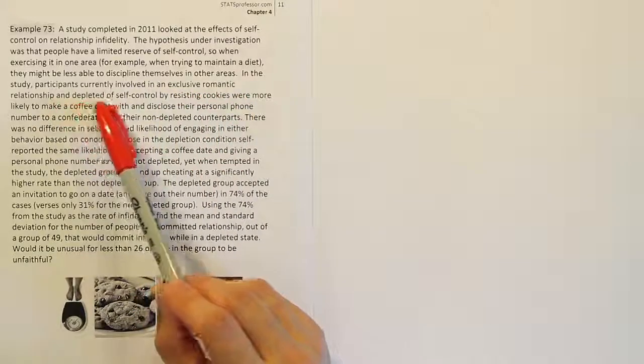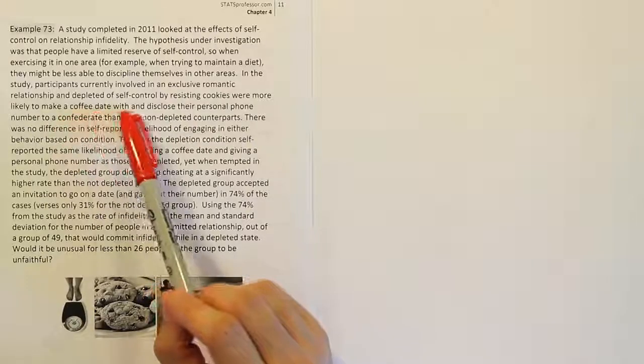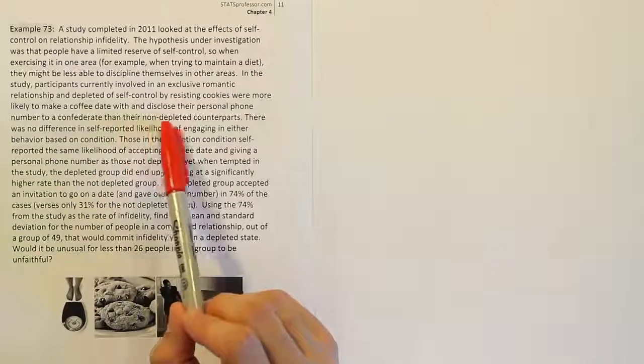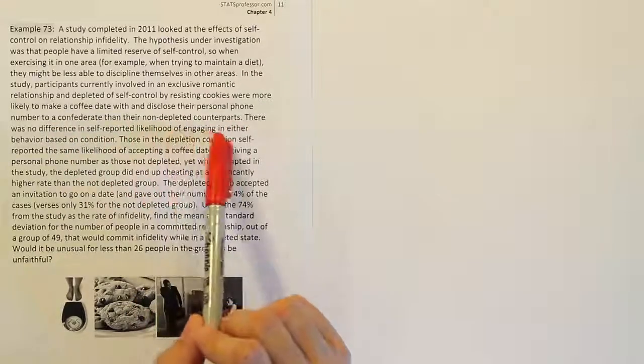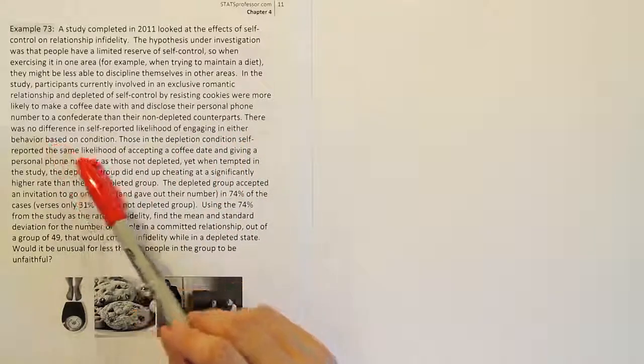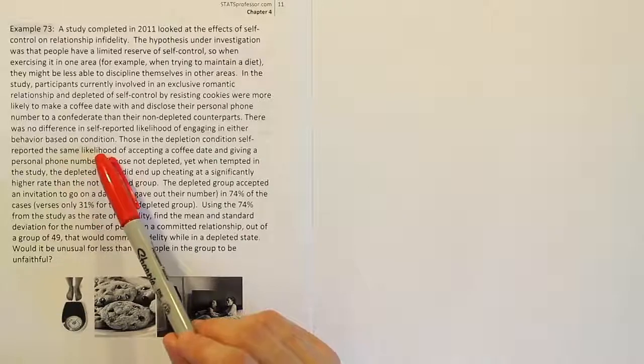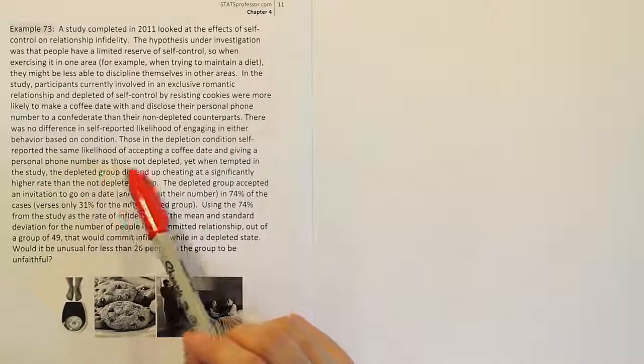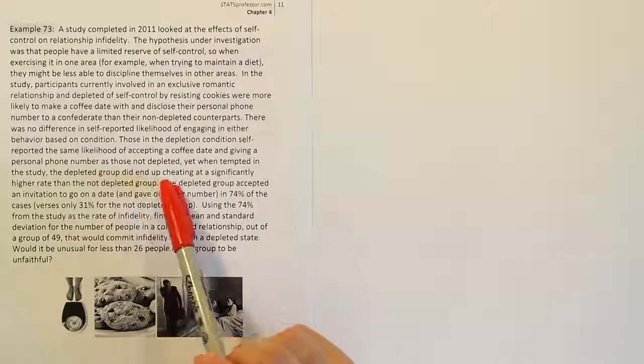In this study, participants currently involved in an exclusive romantic relationship and depleted of self-control by resisting cookies were more likely to make a coffee date with and disclose their personal phone number to a confederate than their non-depleted counterparts. There was no difference in self-reported likelihood of engaging in either behavior based on condition. Those in the depletion condition self-reported the same likelihood of accepting a coffee date and giving a personal phone number as those not depleted.